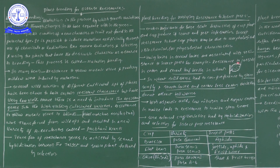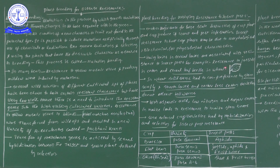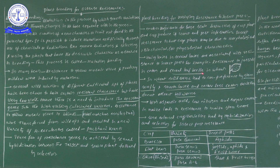For example, resistance to jassid in cotton — in cotton varieties, the presence of hairy leaves is definitely observed. When hairy-like structures are on the surface of cotton, it shows resistance to jassid. Also in wheat, we observe hairy leaves that show resistance to the cereal leaf beetle.